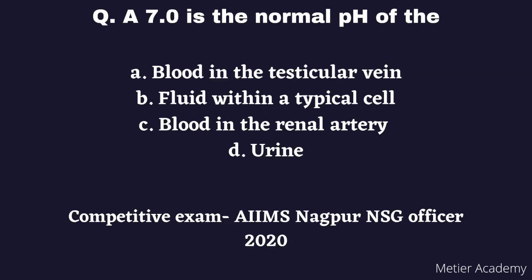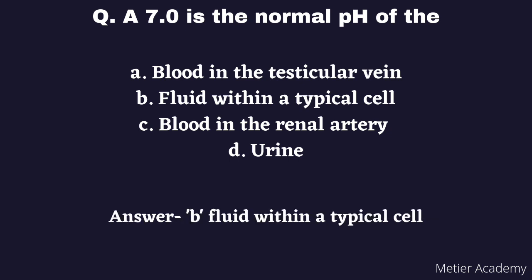The next question is: 7.0 is the normal pH of. The given options are: A) Blood in the testicular vein, B) Fluid within a typical cell, C) Blood in the renal artery, D) Urine. This question was asked in the 2020 AIIMS Nagpur Nursing Officer exam. This is a direct question and the correct answer is Option B, Fluid within a typical cell.